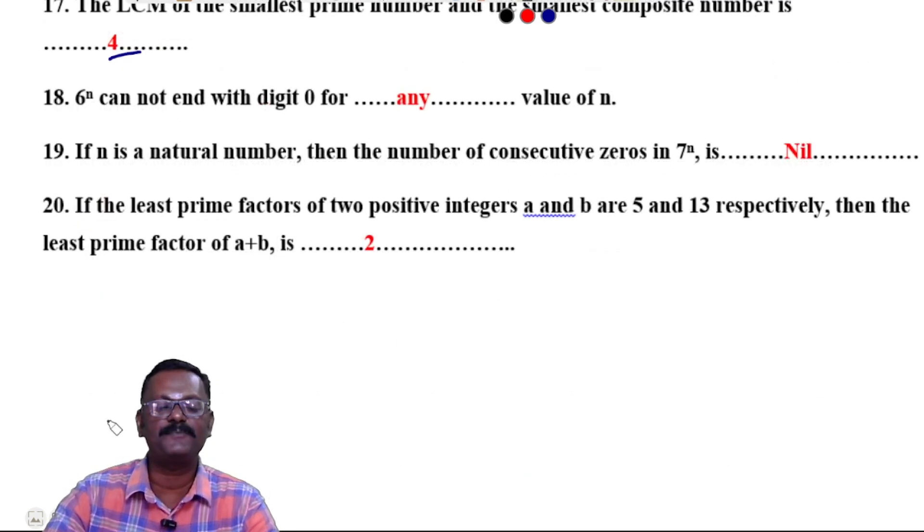Question 19: If n is a natural number, then the number of consecutive zeros in 7^n is 0. Question 20: If the least prime factors of two positive integers a and b are 5 and 13 respectively, then the least prime factor of a + b is 2.